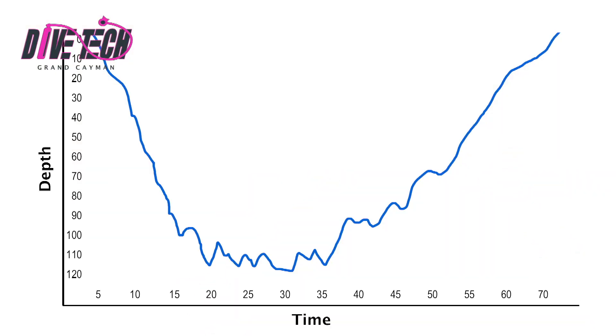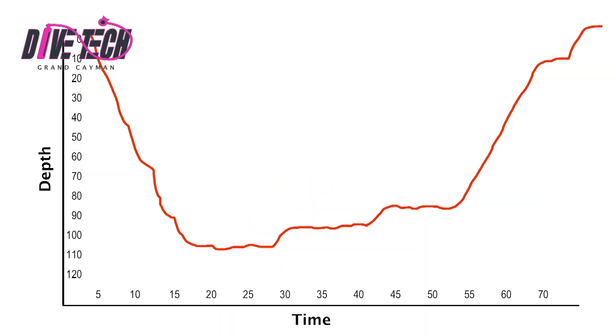Your profile on an open circuit dive might look something like this. When you're diving a rebreather, what you should be looking for is a profile that looks like this. What you don't want to do is add and vent gas with every little depth change. The only time you want to vent or add gas is if you plan to stay at that new target depth.